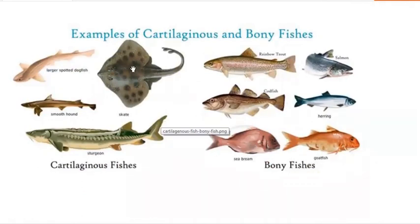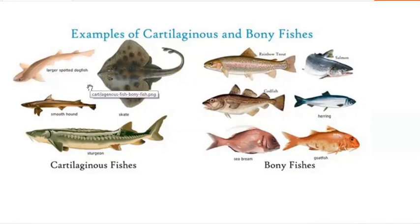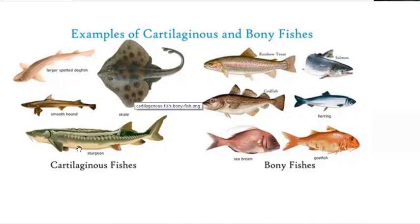Examples of cartilaginous fish include the large spotted dogfish, smooth hound, and skate. Sturgeon is also notable — it produces the world's costliest food, caviar. Caviar refers to fish eggs; sturgeon eggs are among the most expensive foods in the world.